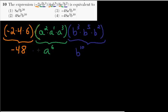And these things are all being multiplied by one another. So the answer is going to be negative 48 times a to the sixth times b to the tenth. And lo and behold, there it is, right there.